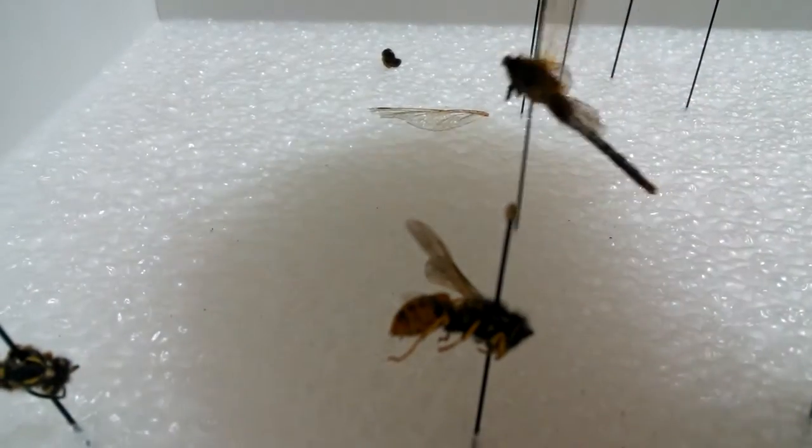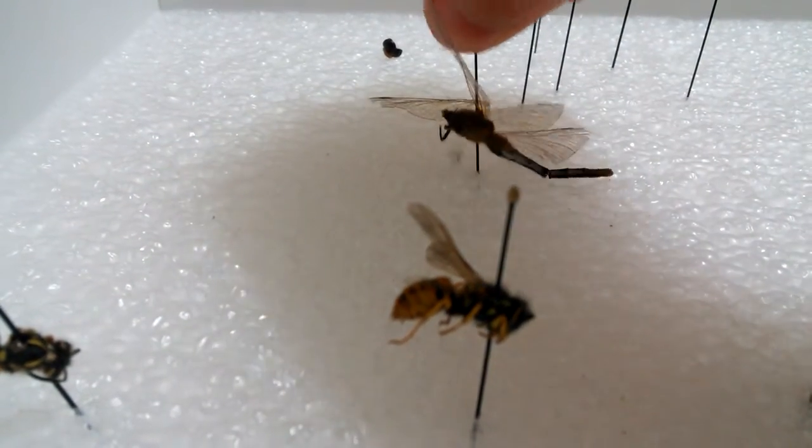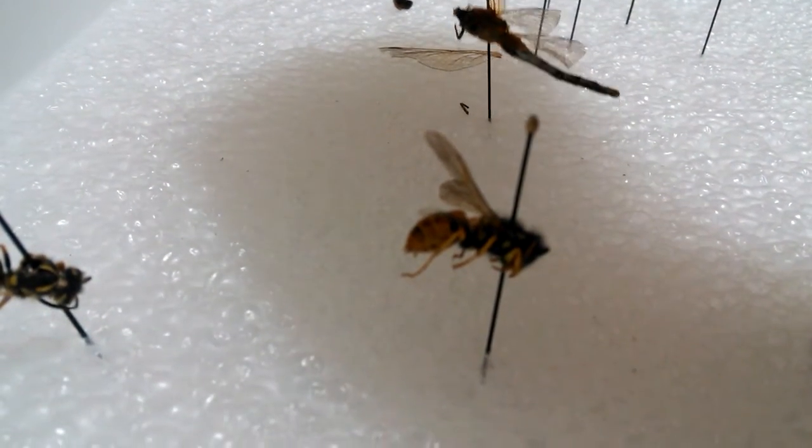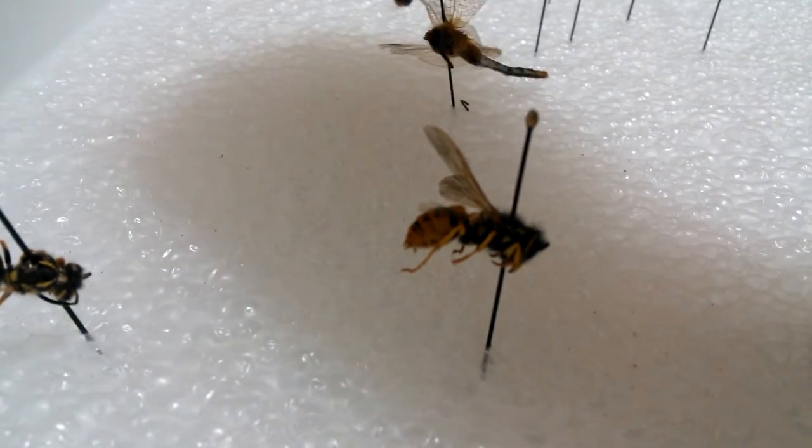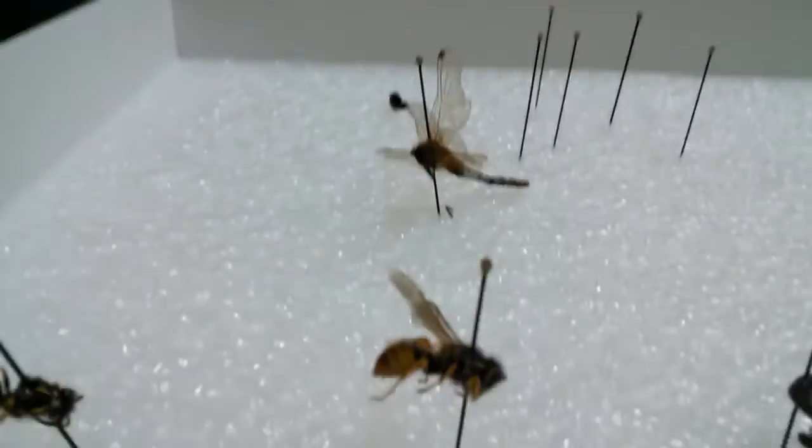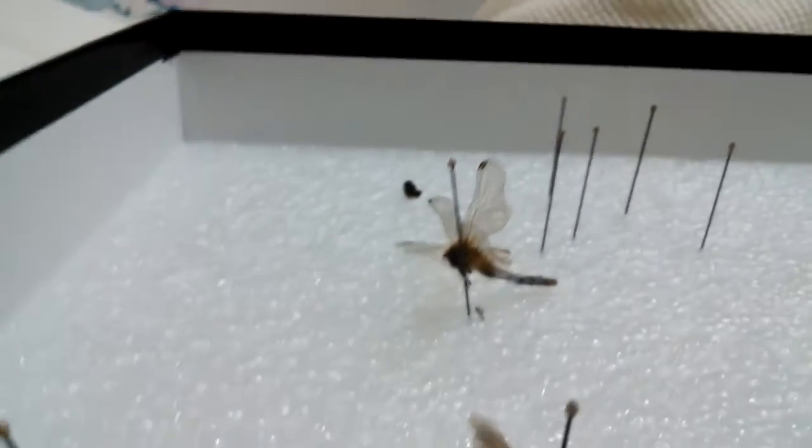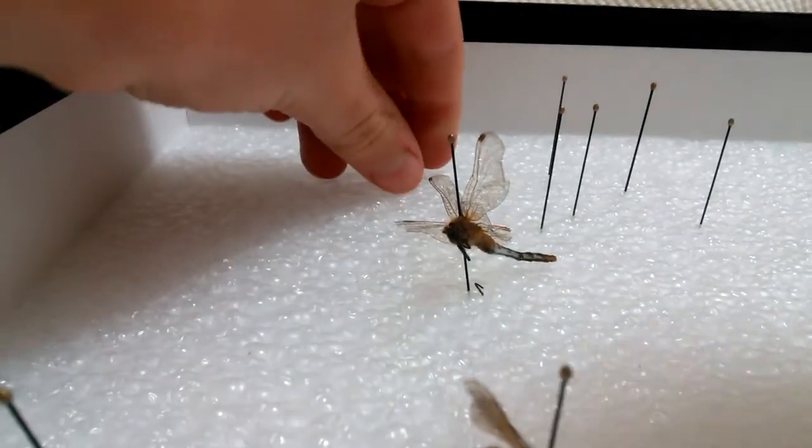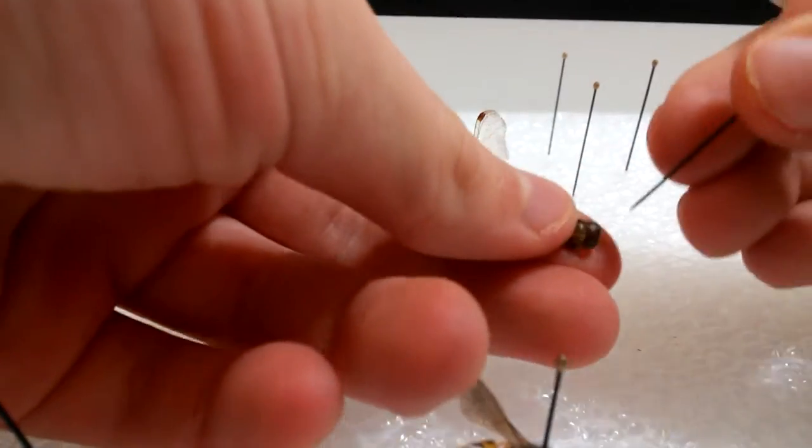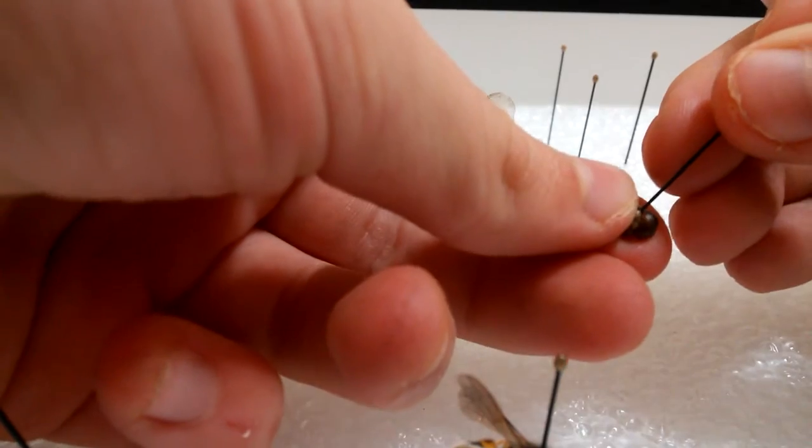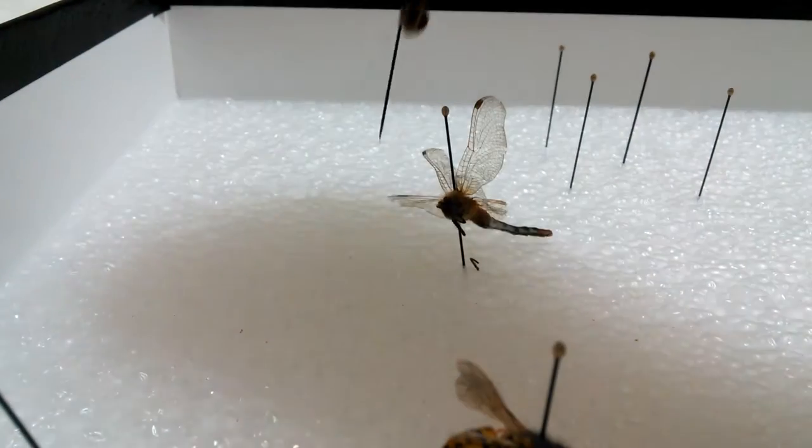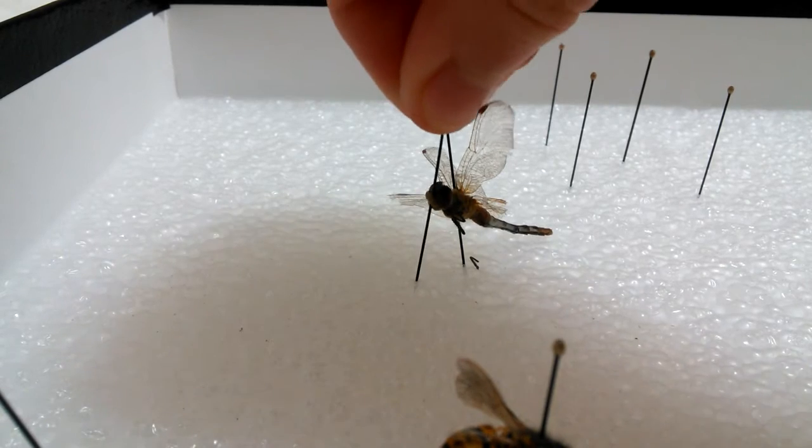You then stick the dragonfly into the foam. And then you need to pin on any excess parts instead of falling off, such as the head. Then you put it against the dragonfly where it belongs.